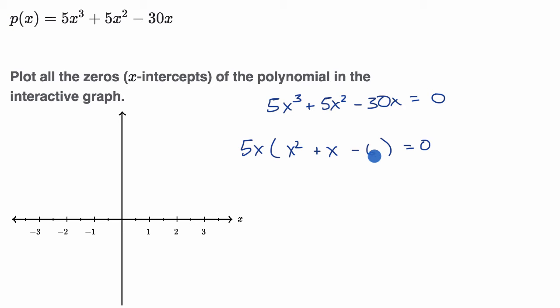And to factor that, let's see, what two numbers add up to one? You could view this as a 1x here. And their product is equal to negative six. And let's see, positive three and negative two would do the trick. So I can rewrite this as 5x times, so x plus three, x plus three times x minus two. And if what I just did looks unfamiliar, I encourage you to review factoring quadratics on Khan Academy. And that is all going to be equal to zero.